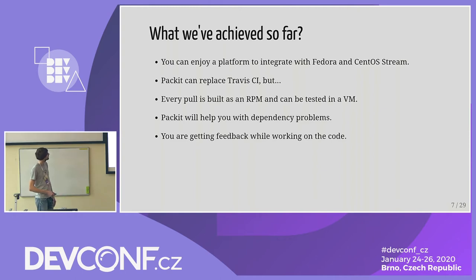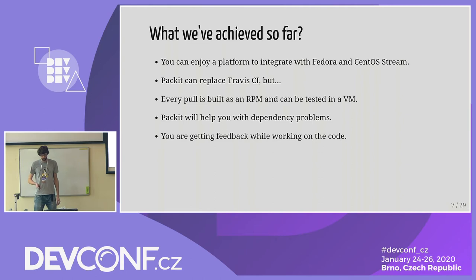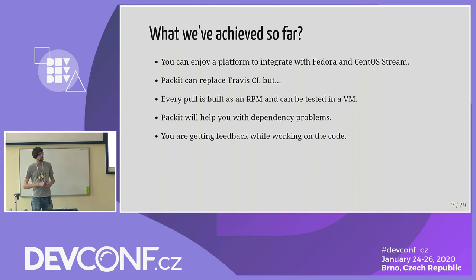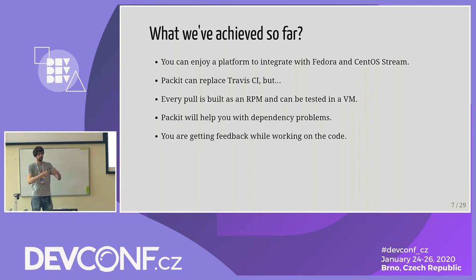The one thing the DNF team would love to have from Packit is cross-pull-request dependencies. The way they work is with multiple repositories — they introduce a new API in one repository and want to use it in a pull request in a different repository. They need to cross-reference pull requests so they are built together. We can't do it with Packit yet, but hopefully in the future we will.